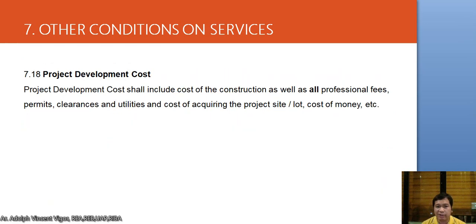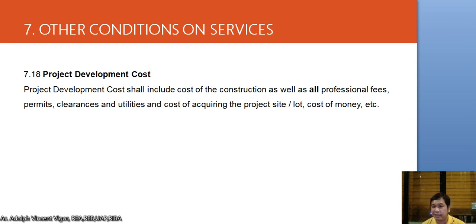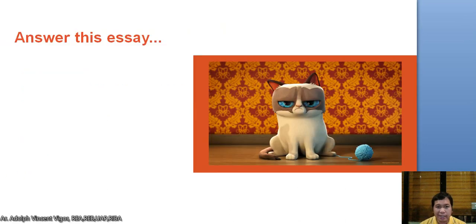Project Development Cost (PDC) includes the cost of construction as well as all professional fees, permits, clearances, utilities, and the cost of acquiring the project site. The difference between PCC and PDC is that PDC already includes fees for professionals including the architect, whereas PCC refers only to the cost of constructing the building itself.